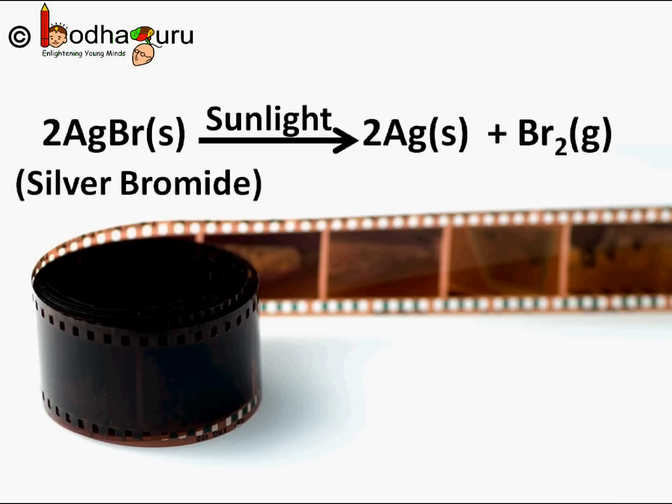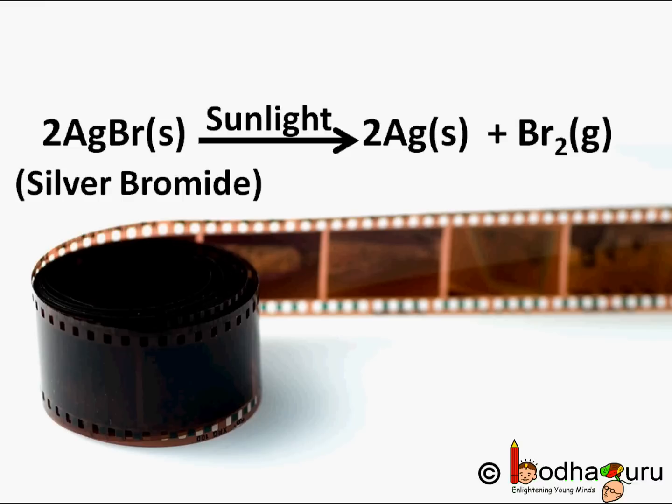Silver bromide, i.e. AgBr, is a water-insoluble salt that has a sensitivity to light. Because of this, it is used in photographic materials during film development. When light falls on it, its molecule decomposes into silver and bromine. The balanced chemical reaction for this is represented as: 2AgBr in presence of sunlight gives 2Ag plus Br₂.